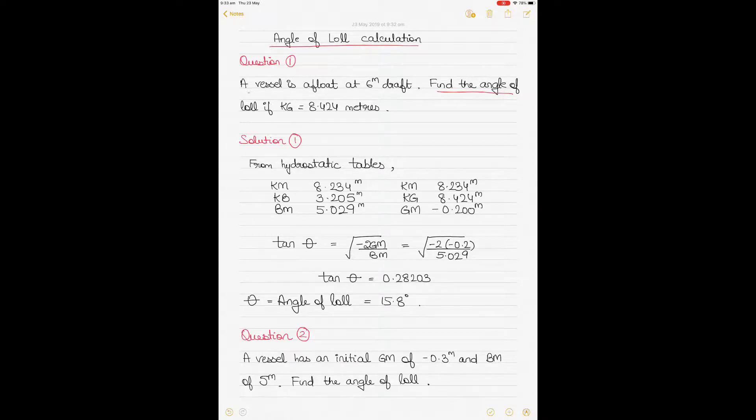Question number one: a vessel is afloat at 6 meters draft and you have to find the angle of loll if KG is 8.424 meters. Before we start, you must know the formula of angle of loll where tan θ equals under root of minus 2 GM divided by BM.